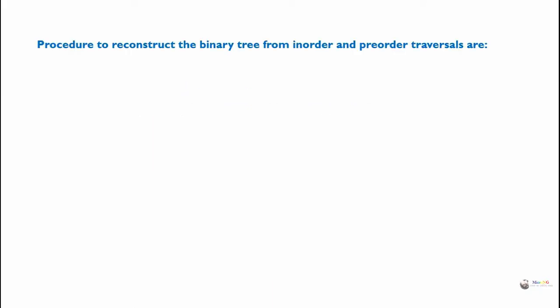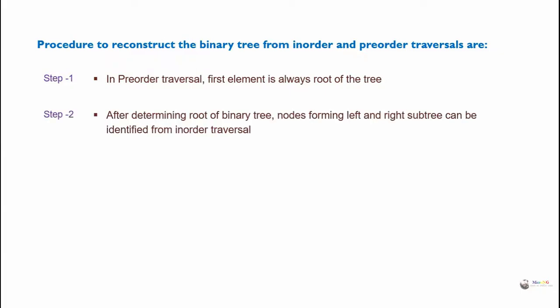The procedure to reconstruct the binary tree from in-order and pre-order traversals: in pre-order traversal, the first element is always the root of the tree. After determining the root of the binary tree, nodes forming the left and right subtree can be identified from in-order traversal.